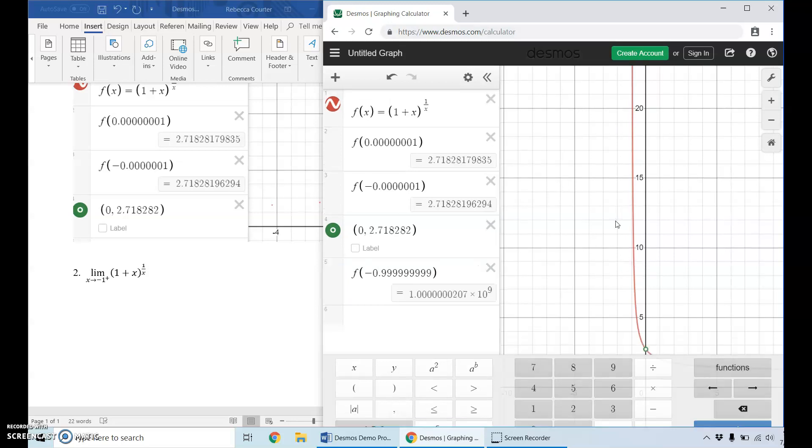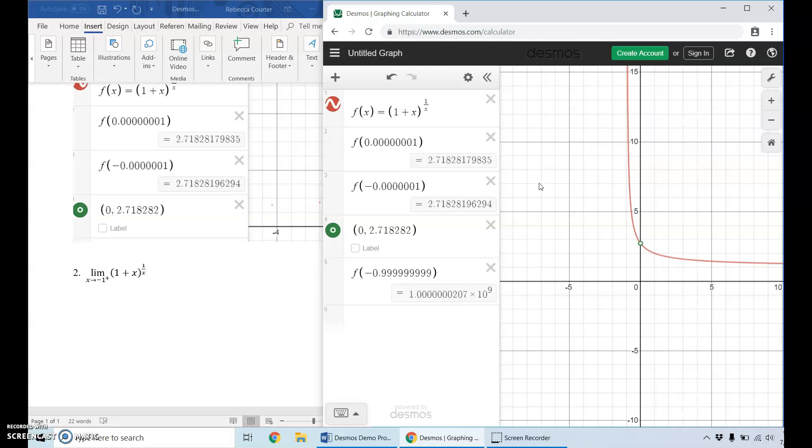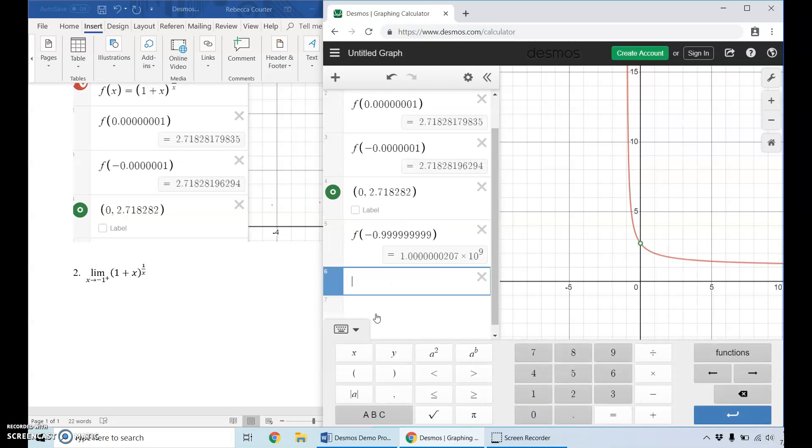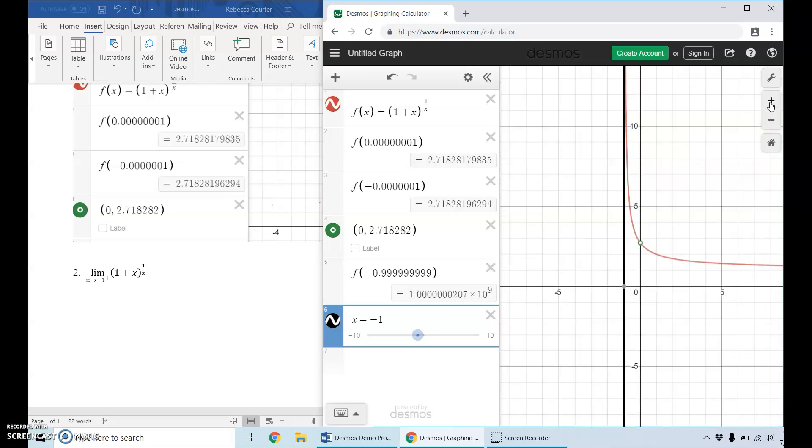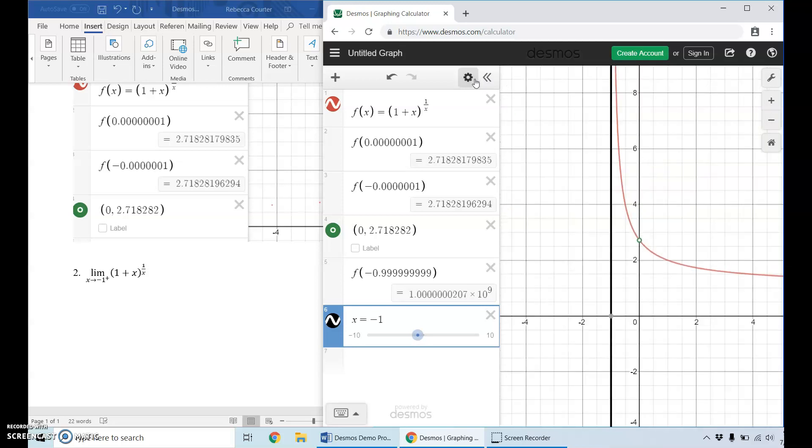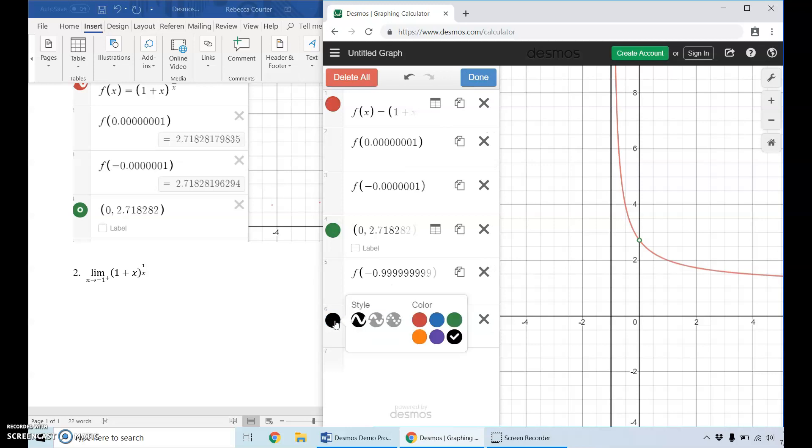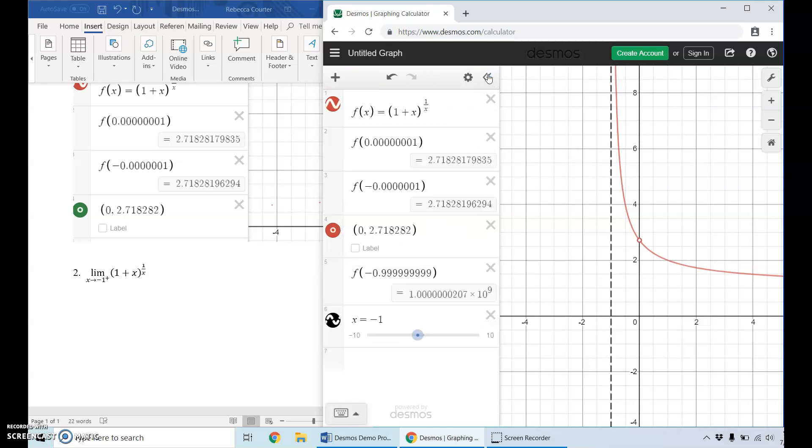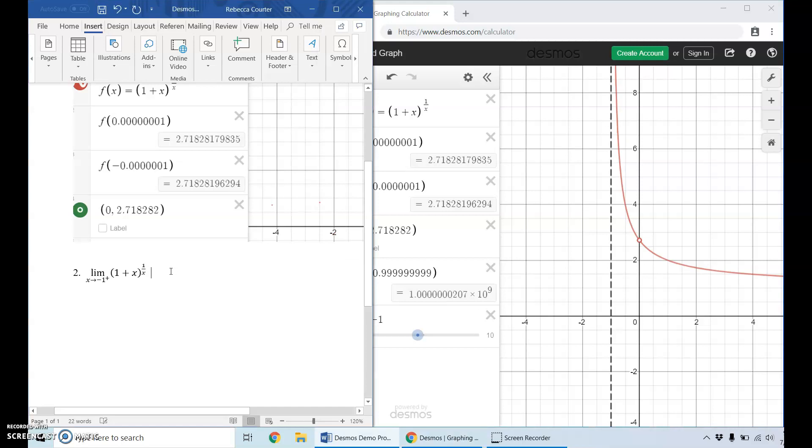To show that more clearly on our graph, we can have Desmos draw in a vertical asymptote at X equals negative one. I'm gonna zoom back in and I'm going to edit the list, click on this color, and I want to make this a dashed line so it looks more like an asymptote. I also want to change this color to red so it all looks like part of the same graph, and then I'll click done.